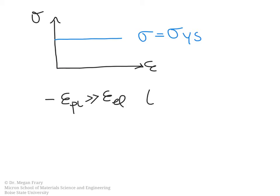So the very simplest model for a stress strain curve simply looks like this. It's not very realistic, but it's a possibility, and here this stress is equal to the yield stress. A few things to note about this particular model is that the plastic strain is much, much greater than the elastic strain.